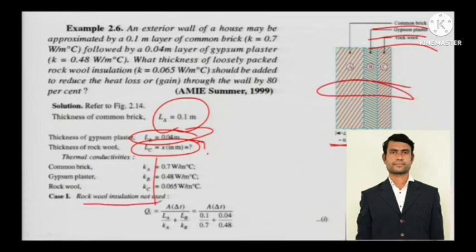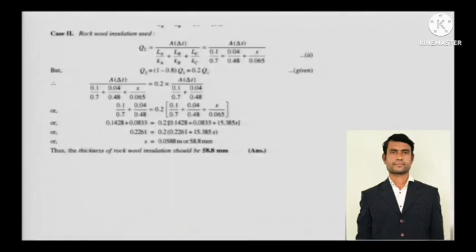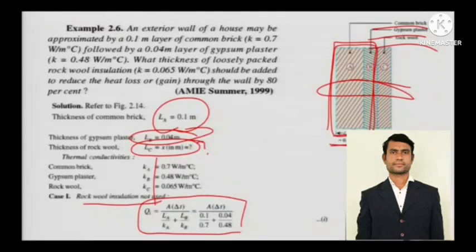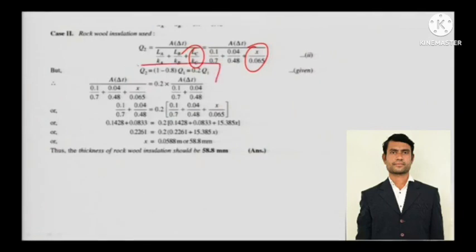Case one: rock wool insulation not used — it is only the two layers (common brick and gypsum plaster). Solve for Q with those two elements. Note that delta T is not given here. Case two: when rock wool insulation is added as a third element, Q2 — the resulting heat loss — must be 80 percent less than Q from case one when rock wool was not used. That is the main condition to solve for the rock wool thickness.